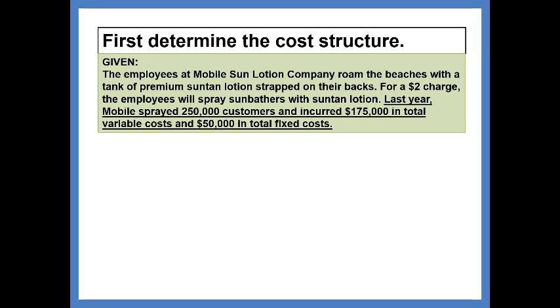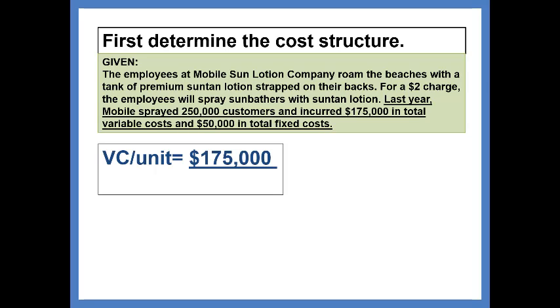We were given that last year, when Mobile sprayed 250,000 customers, they incurred $175,000 in total variable costs and $50,000 in total fixed costs. For the variable costs, we need to find the variable costs per unit. Last year, it was $175,000, and we had 250,000 customers. That computes to 70 cents per customer, or 70 cents per unit of service.